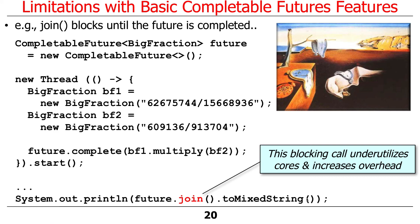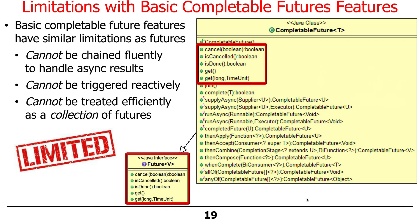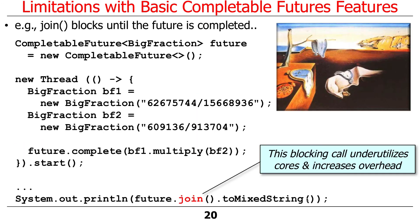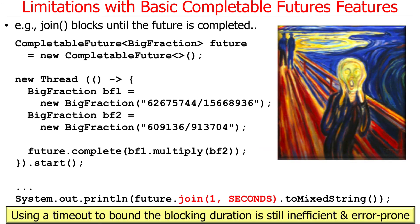And just as a simple example, this is an example of this point about not being triggered reactively. So we're blocking here. We're explicitly blocking, waiting for the result. And that's almost always the wrong thing to do because we don't really know how long this is going to block. We don't know how long it should block. We could add in a timed block, but it's still inefficient and error-prone. So this is just an example of kind of what you don't want to do if you can avoid it.